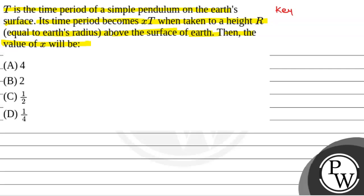The key concept used to solve this question is that the time period of a simple pendulum is given by 2π√(L/G), where L is the length of the pendulum and G is the acceleration due to gravity.